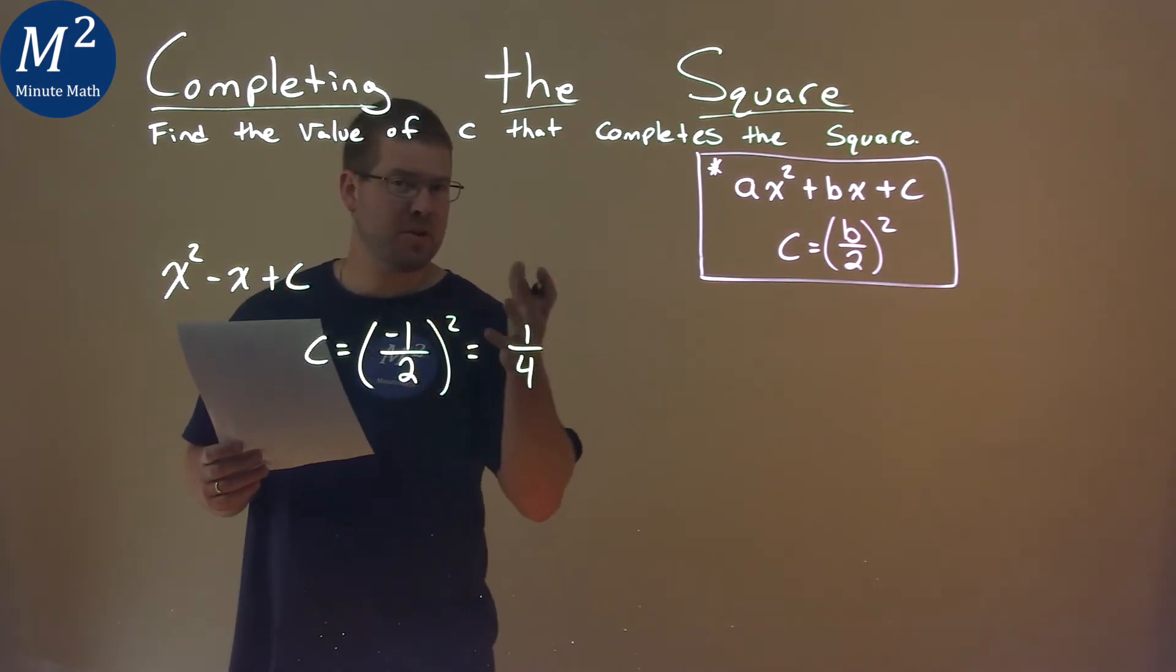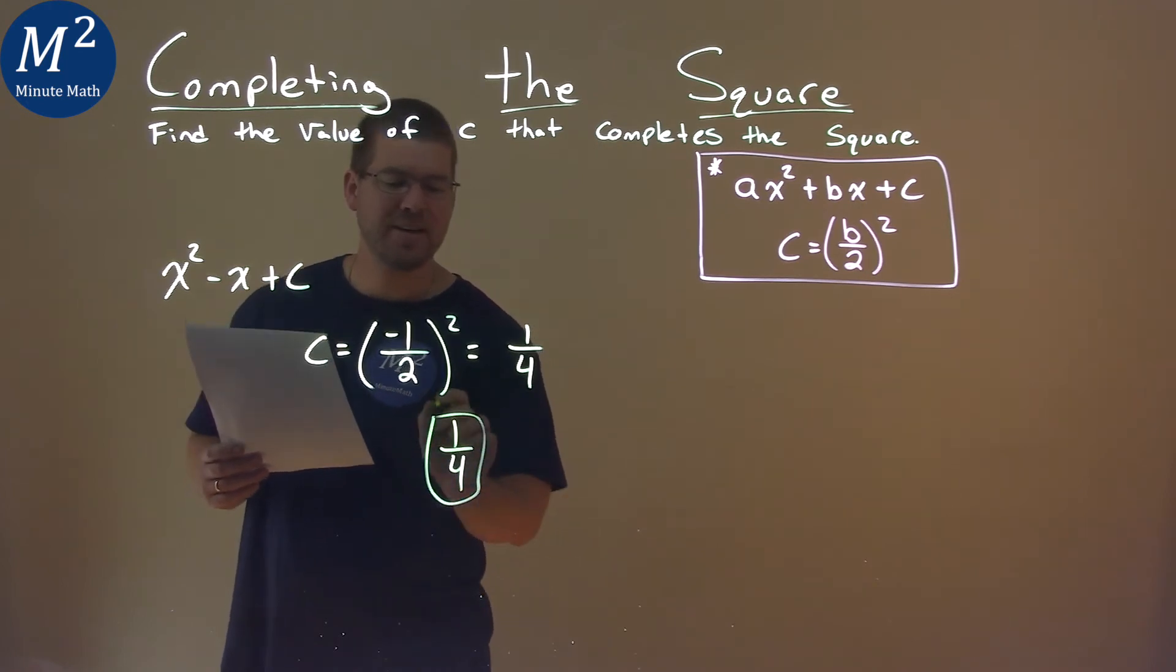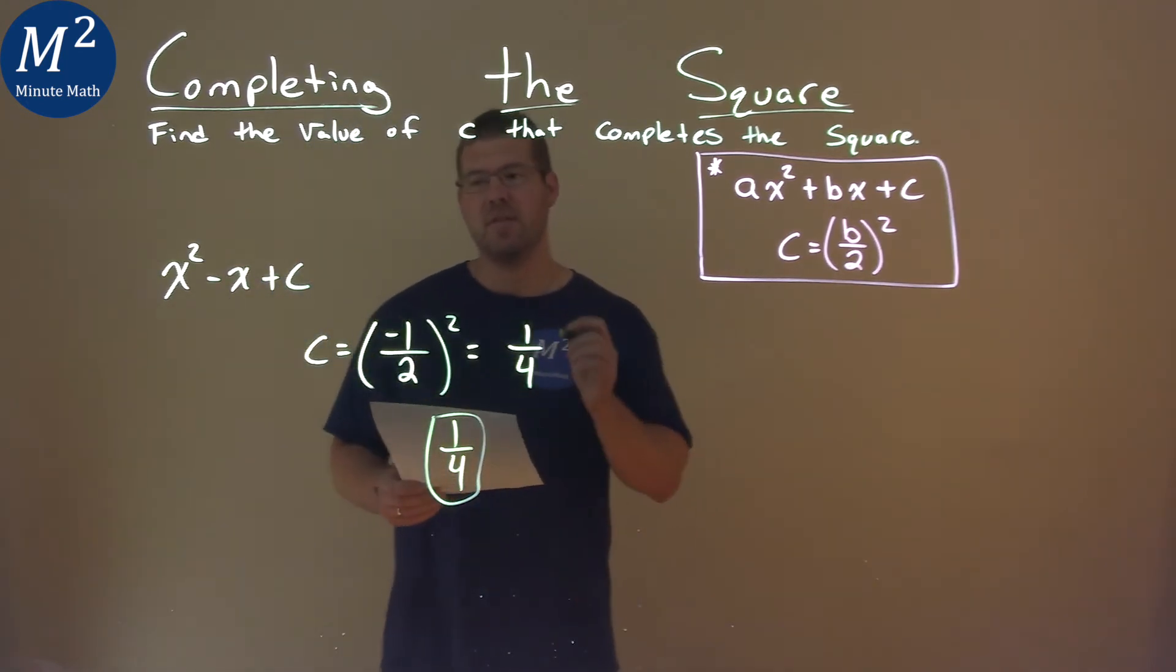And that's really it. Make sure you know it's positive, but 1 over 4 is the value of c that completes the square.